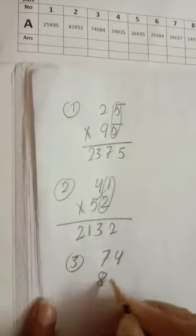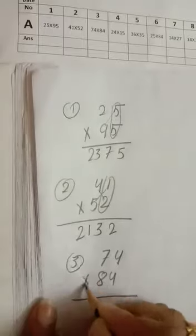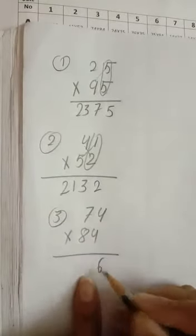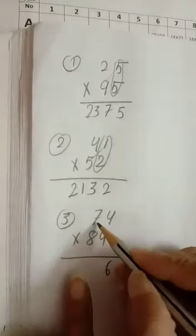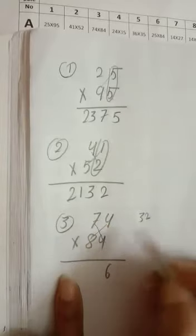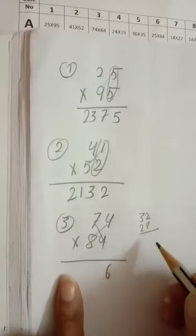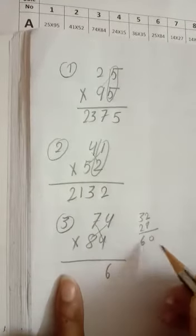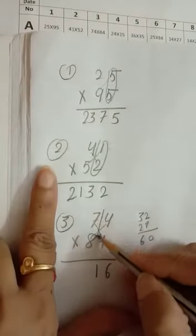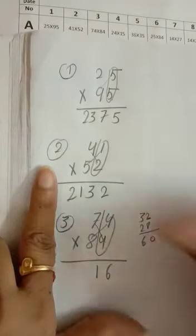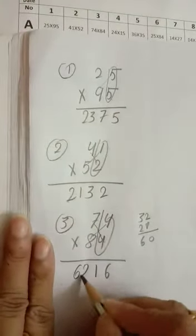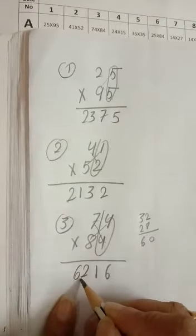74 multiply by 84. We have to start. 4×4=16, write 6 carry is 1. Now criss cross: 4×8=32 and 7×4=28. Now we have to add 60. 60 plus 1=61, write 1 carry we have 6. Now leave this one row: 8×7 is 56 and 62. We have to write down 62. Your answer will be 6216.